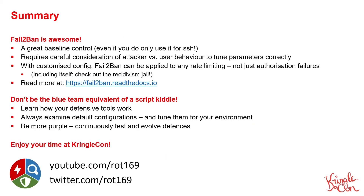Hopefully by now you feel like Fail2Ban is as awesome as I think it is. It really is a great baseline control for internet-connected services, even if you're only using it for that basic case of protecting an SSH server. But of course, with a customised configuration, Fail2Ban can be applied to any application. The other key takeaway I hope you leave with is to not be the Blue Team equivalent of a Script Kiddy. There are already a bunch of guides out there that explain the basic Fail2Ban configuration for protecting an SSH service, but if you just blindly copy and paste the config, the parameters may not be tuned correctly for your environment, and you also miss out on all the knowledge that you can apply Fail2Ban to other services too. Do take the time to learn how your defensive tools work, and how you need to configure and tune them to match your particular environment.